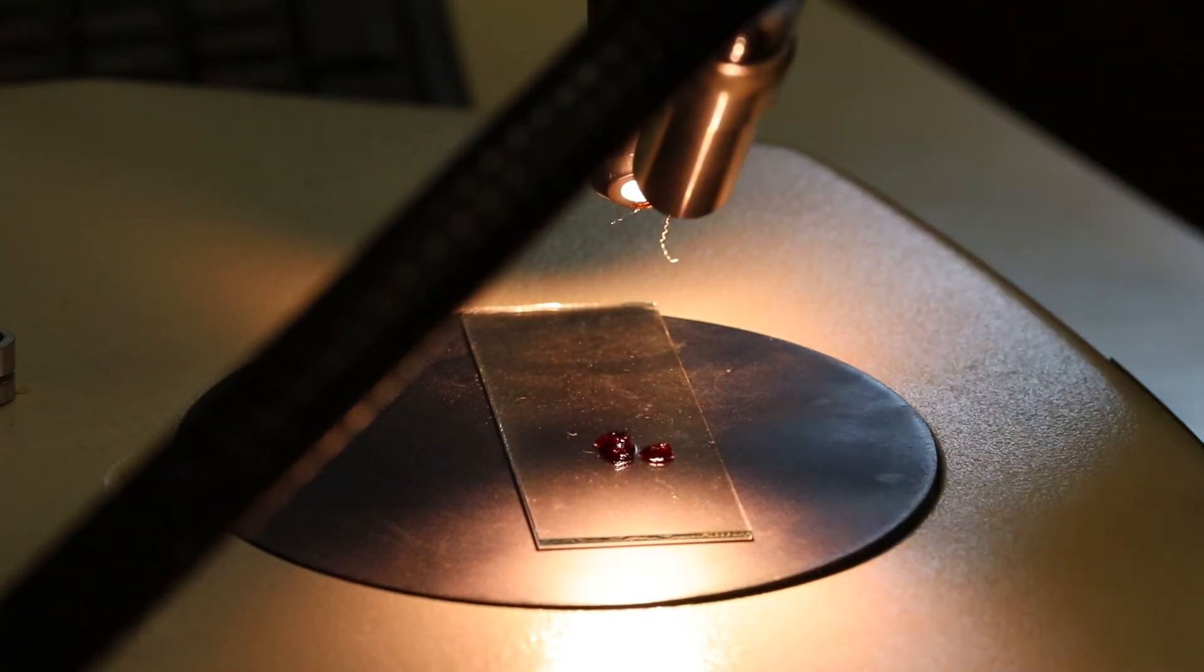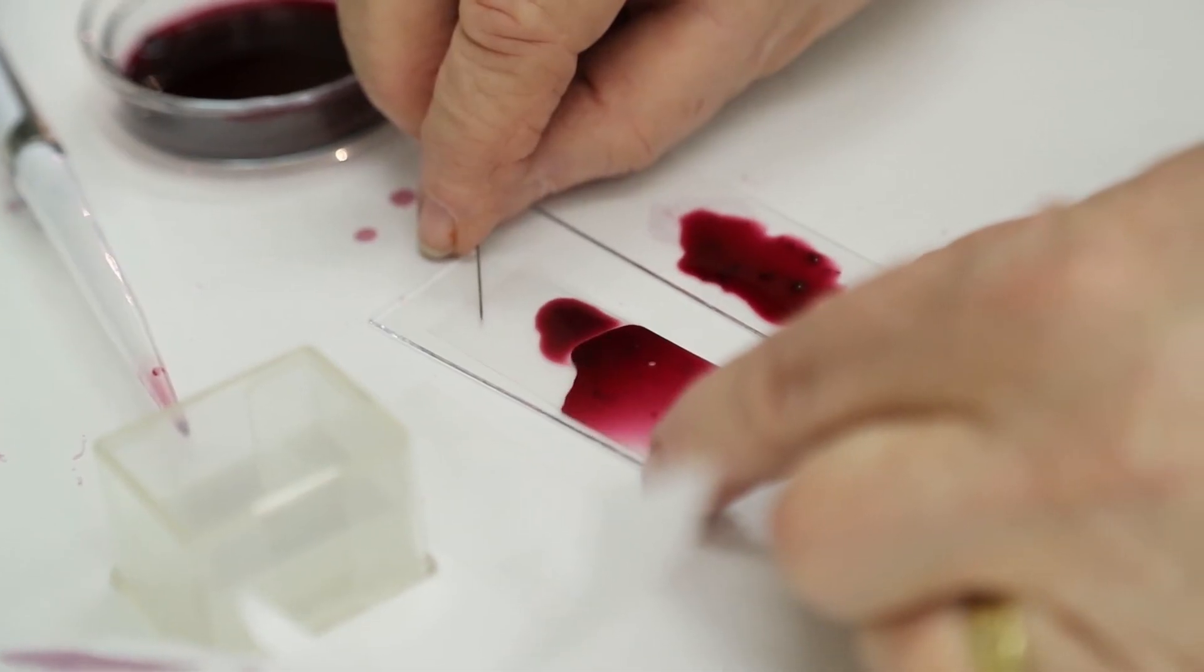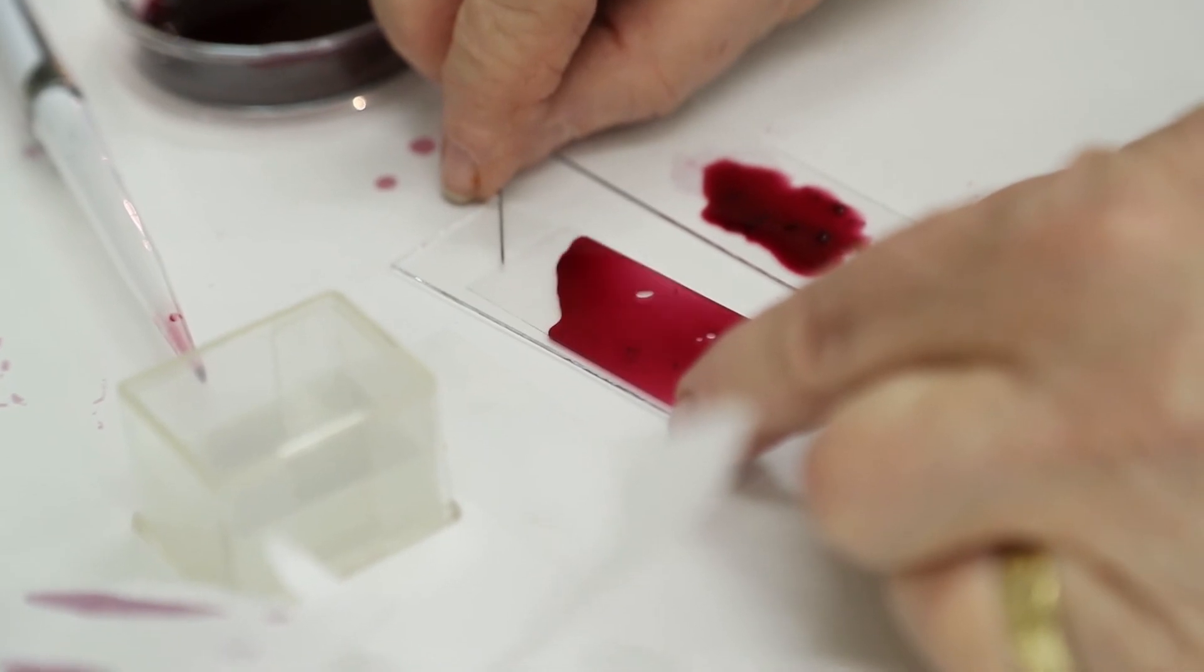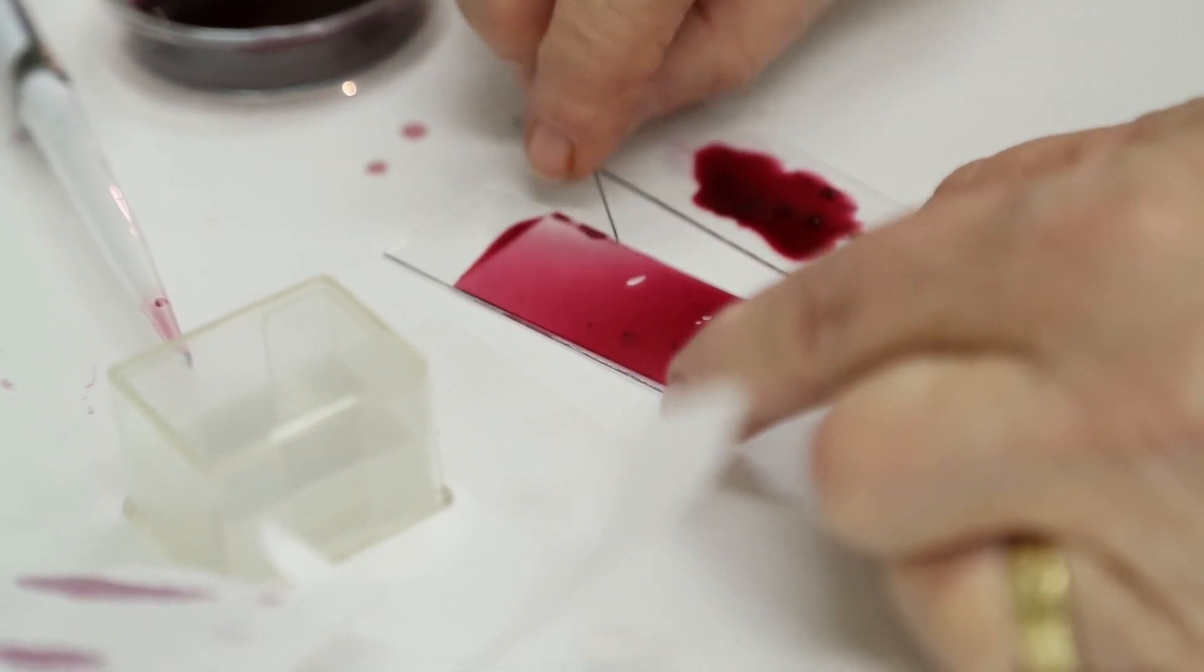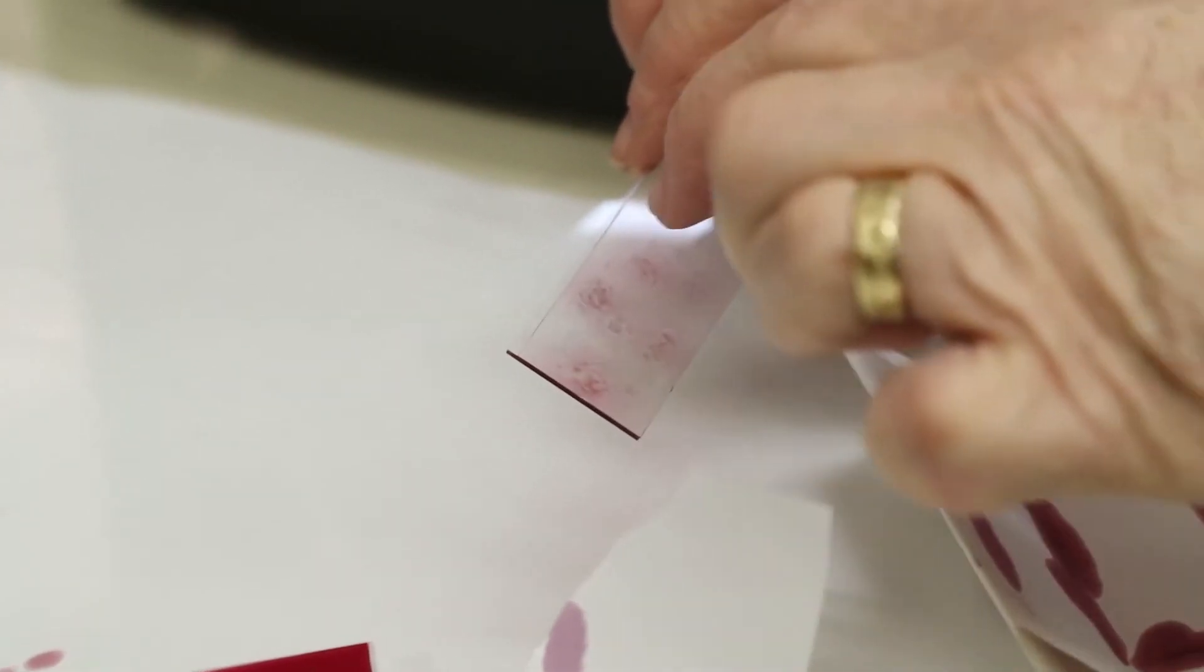She carefully moves them to a microscope slide. Now she squashes the tissues that contain the sperm cells with a cover slip. Into this apparently simple procedure Dr. Richler puts decades of experience to obtain optimal results.